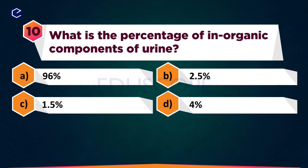What is the percentage of inorganic components of urine? Options: 96%, 2.5%, 1.5%, 4%.